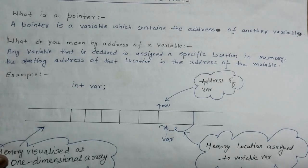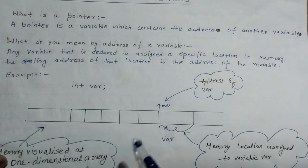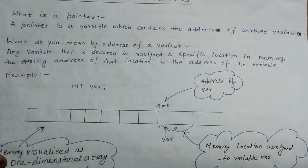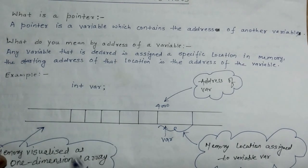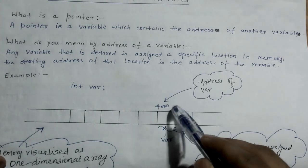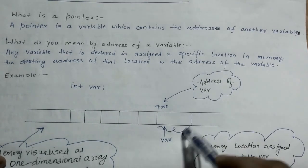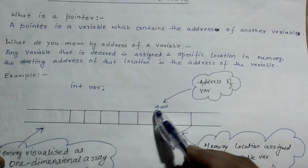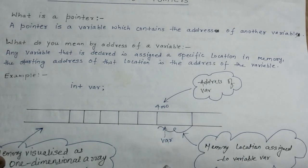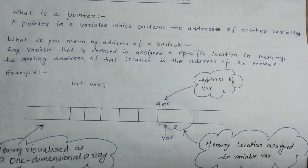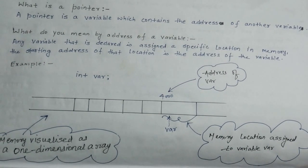Let's understand what it means. Whenever you declare a variable — let's say we declare a variable var which is of type int — it must be assigned a memory location in memory because it is stored in the memory of the system. Let's say the variable var is stored in this memory location, this block. This block must have an address because the system must know where this variable is located so that it can fetch it later using its location.